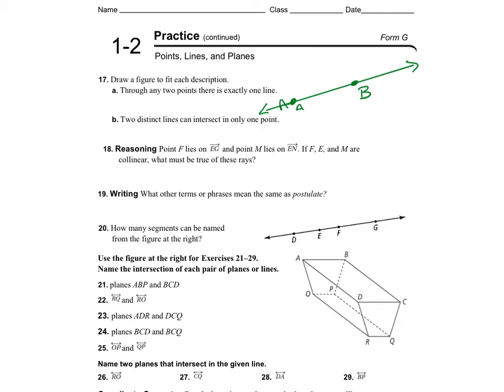Two distinct lines can intersect in only one point. Using that same line and drawing another line with the ruler, the only way these two lines intersect is at a single point. The intersection of two lines is always exactly one point — it could be point A, point B, or any other point, but it's just one point.